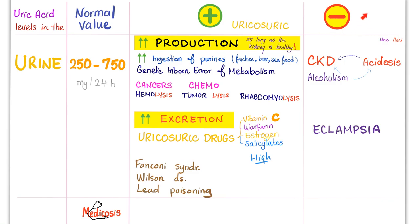What will decrease uric acid in the urine? A bad kidney — if your kidney is screwed, it cannot excrete uric acid. Examples: acidosis can damage your kidney, and alcoholism can damage your kidney and lead to acidosis. In acidosis, the kidney has to choose between excreting uric acid or other acids — it cannot excrete both without burning the tubules. Eclampsia can also cause this, possibly because it leads to end-organ damage including the kidney.